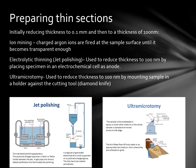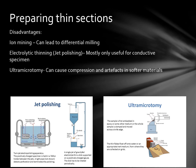Other sectioning methods include ion milling and electrolytic thinning. In ion milling, charged argon ions are fired at the sample surface until it becomes transparent enough. Electrolytic thinning, also known as jet polishing, is used to reduce thickness to 100 nm by placing the specimen in an electrochemical cell as an anode. The ultramicrotome reduces the sample to a very small section by mounting onto a holder against a diamond or glass knife cutting tool. Disadvantages include: ion milling can lead to differential milling which distorts the sample; electrolytic thinning is mostly useful for conductor specimens only; and the ultramicrotome can cause compressions and artefacts in softer materials or if embedding did not set properly.